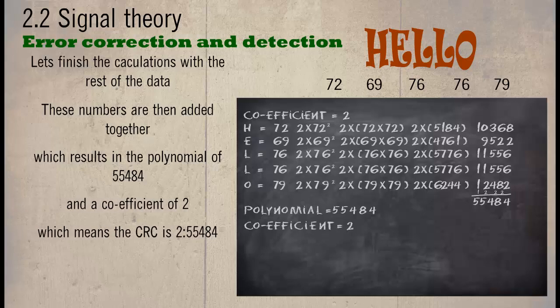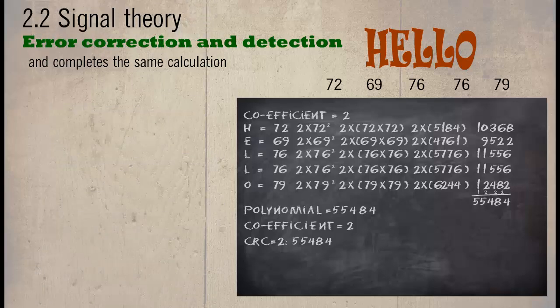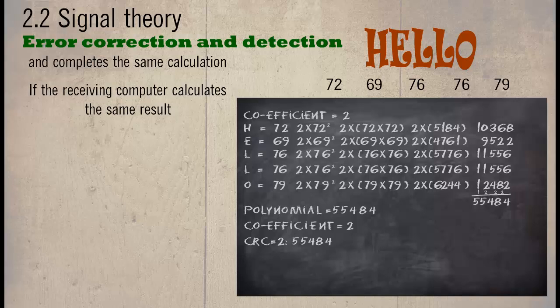The computer that receives the data looks at the coefficient and completes the same calculation. If the receiving computer calculates the same, then the packet is accepted, otherwise it is rejected.